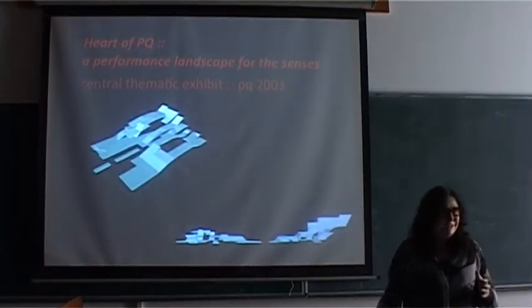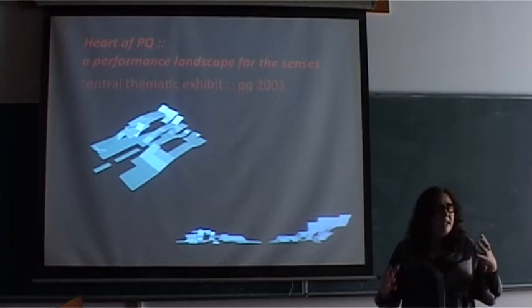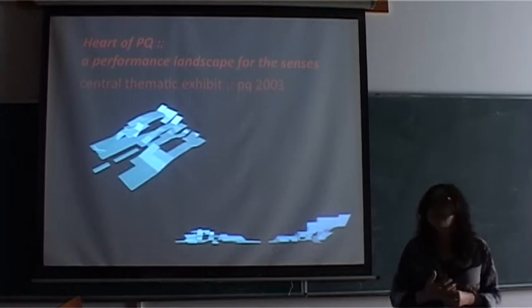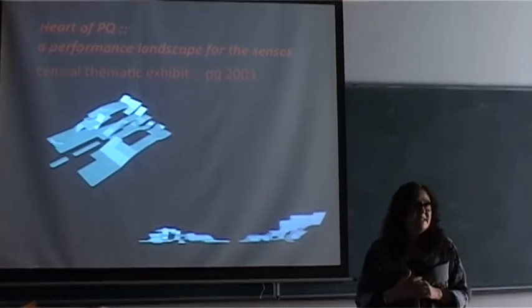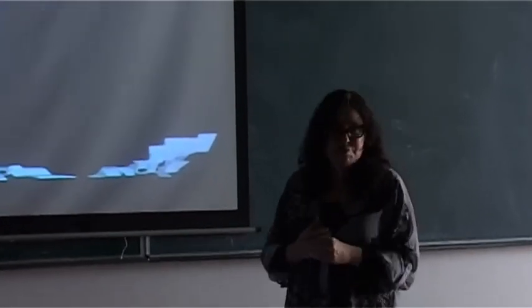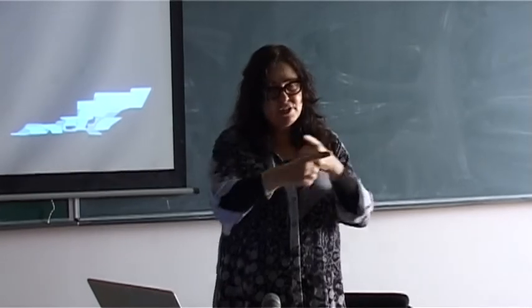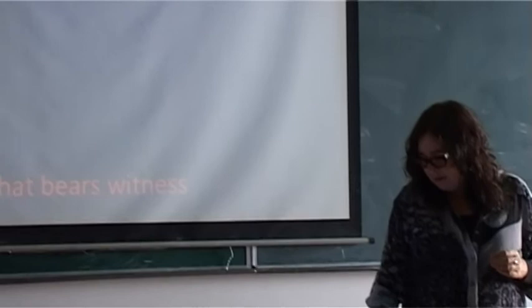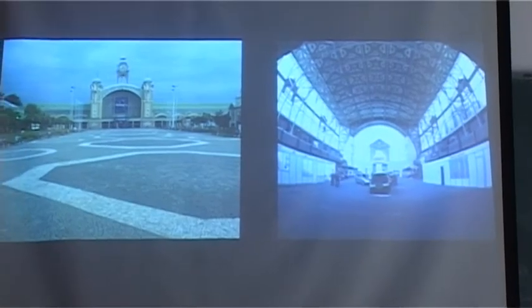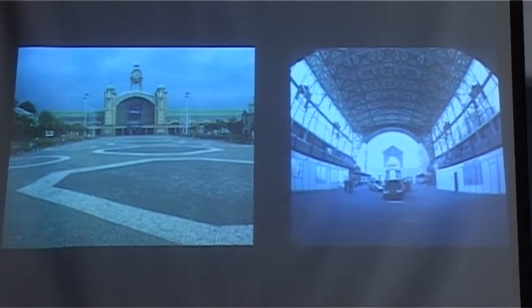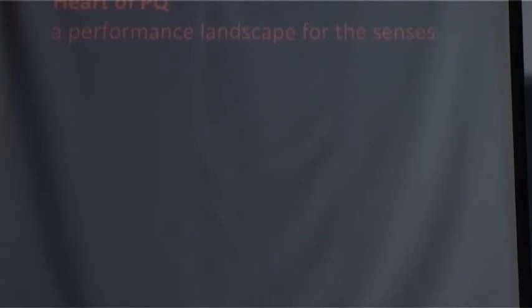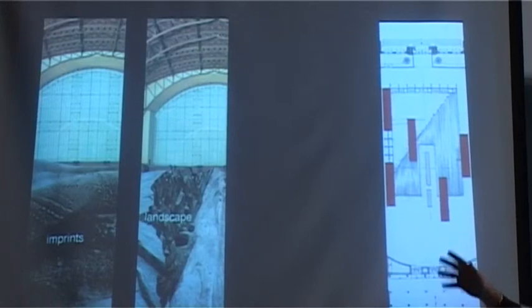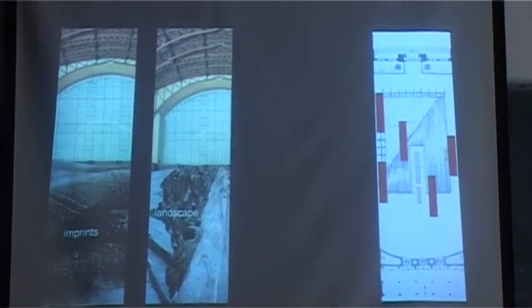Through that exhibition, which won a UNESCO prize, PQ asked me to design the central exhibit for 2003. We called it the Heart of PQ because it was in the central hall at the very heart where people had to pass through. We called it a performance landscape for the senses. It was in this huge building, the giant building of Veletržní Palác, one of the exhibition halls — quite overwhelming to look at. Thinking about it as a landscape that bears witness — a landscape within the space — we did it by creating an abstract landscape with five towers, each one representing one of the five classic senses.